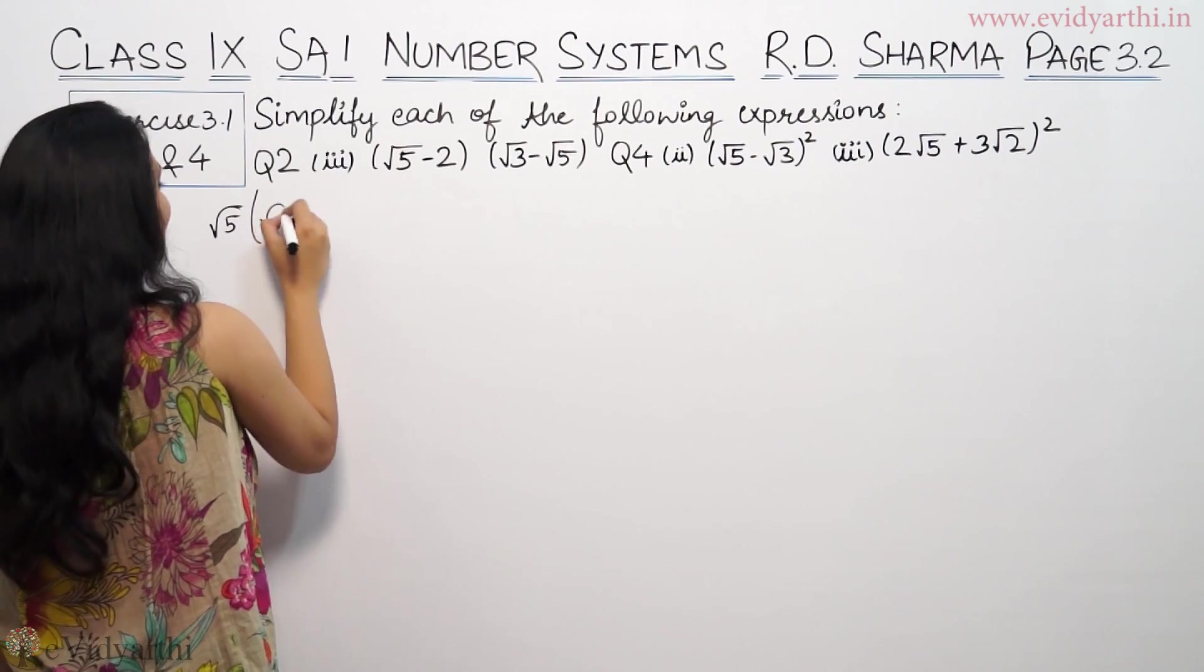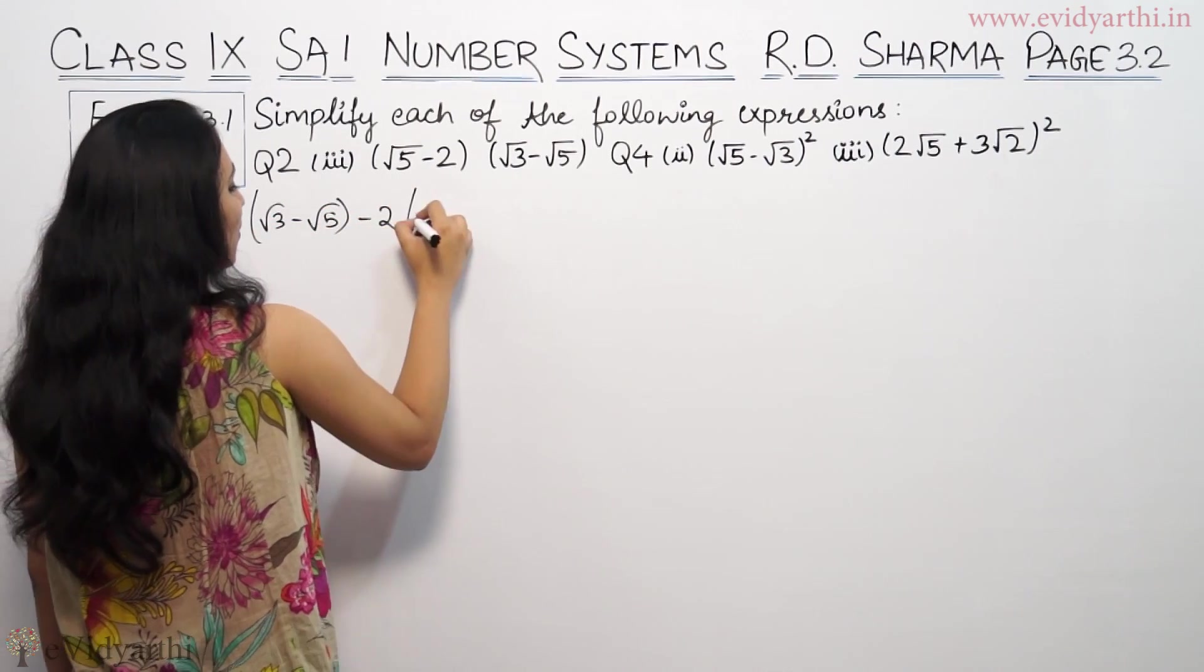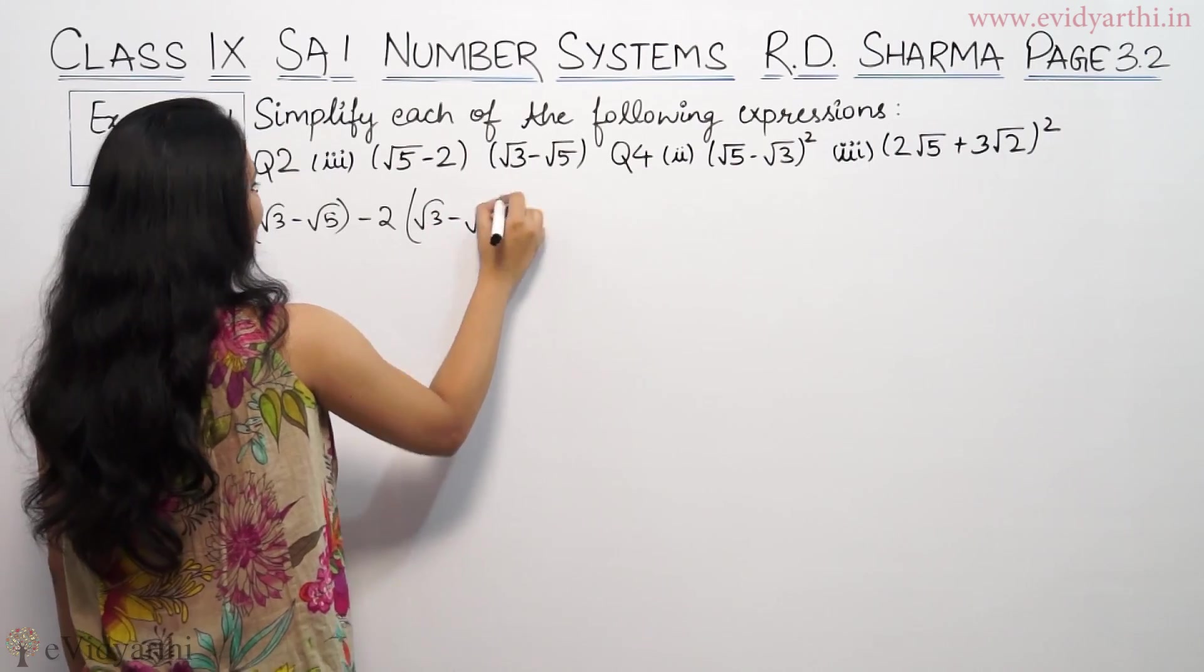So √5 we will multiply by (√3 - √5), then minus 2 times (√3 - √5).